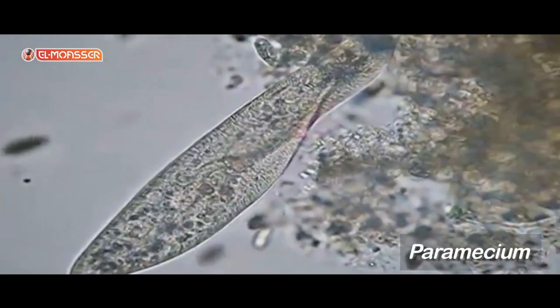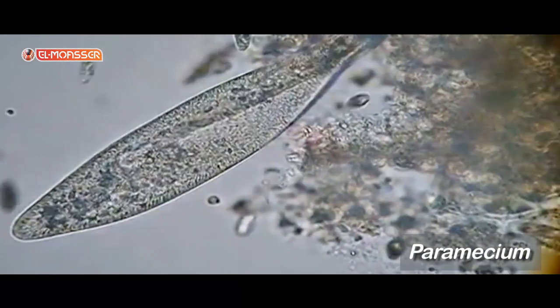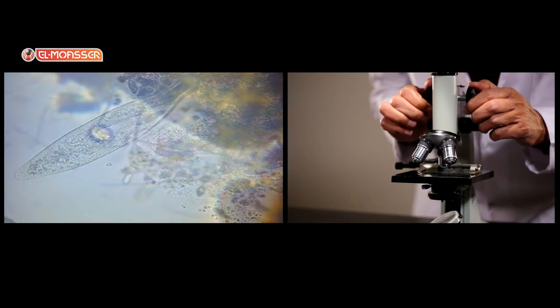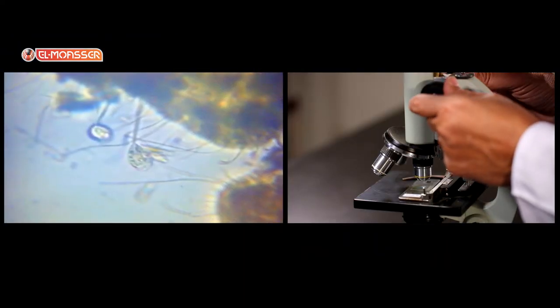The cells that move by cilia are paramecium, and they live in ponds too. There are other organisms like euglena